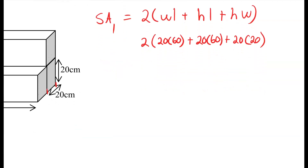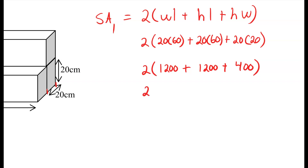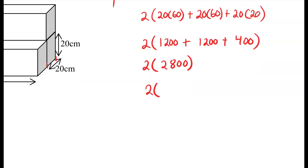Following the order of operations, we work within the brackets first, doing the multiplication. We have 20 multiplied by 60, which is 1,200, plus 20 multiplied by 60, which is 1,200, plus 20 multiplied by 20, which is 400. Adding everything together gives us 2,800 inside the brackets. Then 2 multiplied by 2,800 means the surface area of one rectangular prism equals 5,600 centimeters squared.